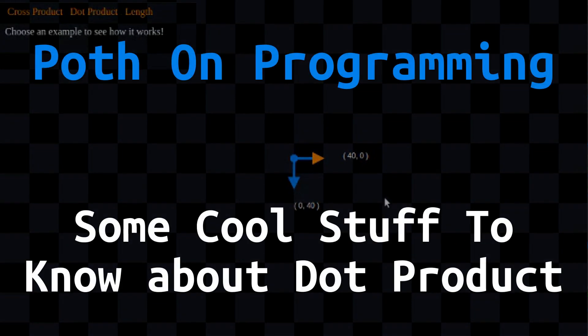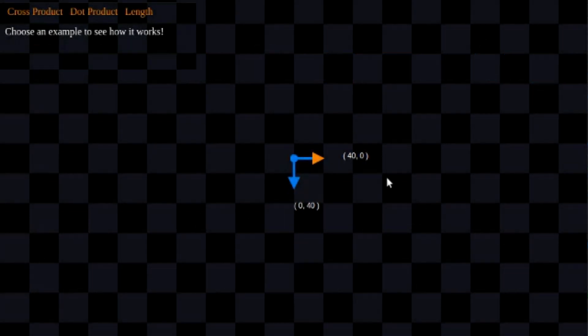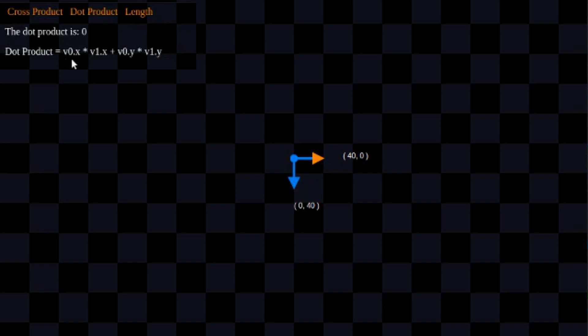Hey guys, my name is Frank. This is the PullThumb Programming video log and today I'm going to talk about two-dimensional dot product with two-dimensional vectors. I have a little example program here, and I'm going to talk about some cool stuff you can do with the dot product formula, which you can see right here.